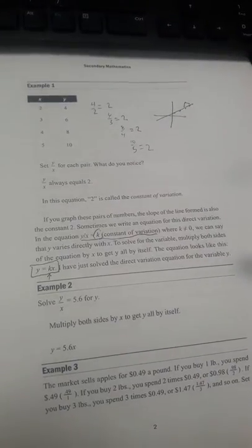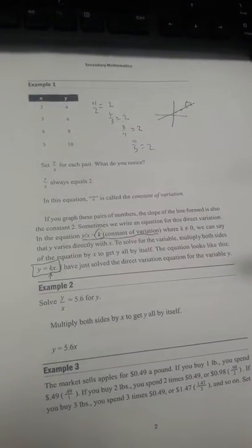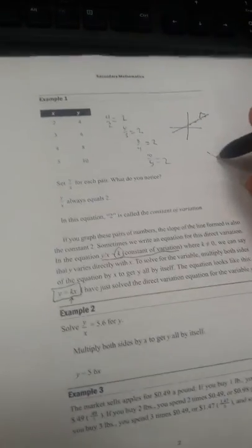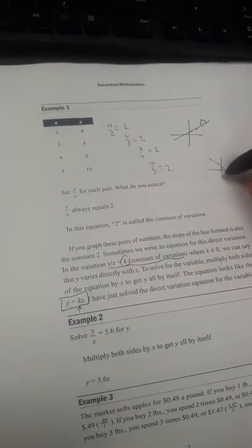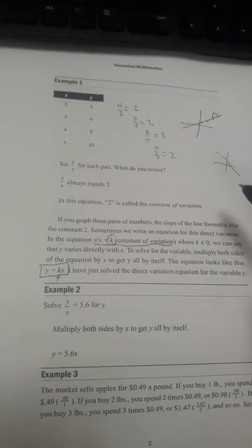And that will give us our constant of variation, where k cannot be 0. Otherwise, there wouldn't be any slope. But k could be a negative number. The slope would just be the opposite direction if k is negative.